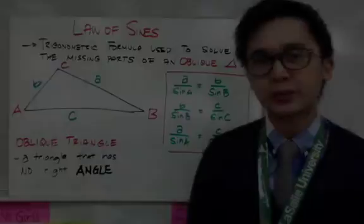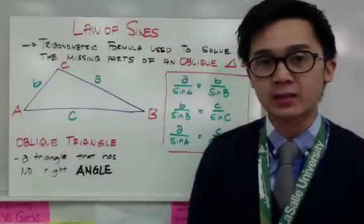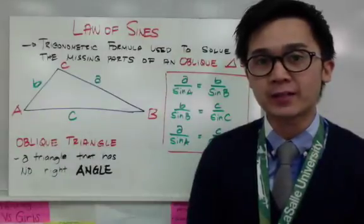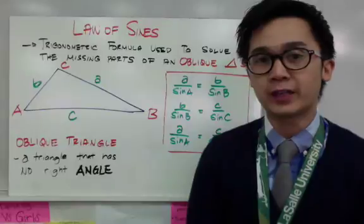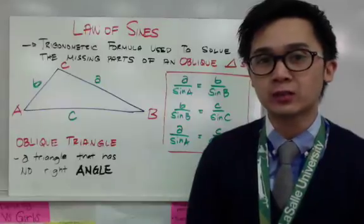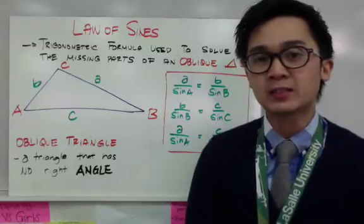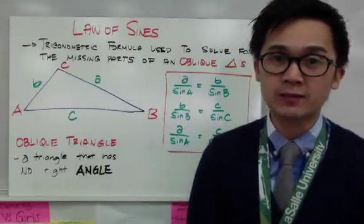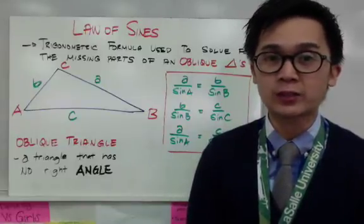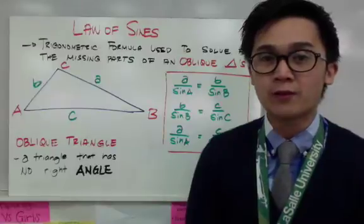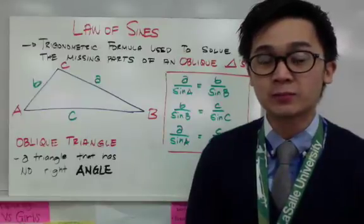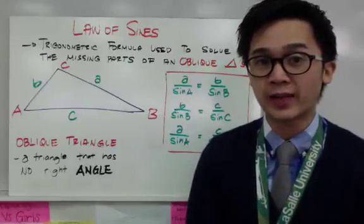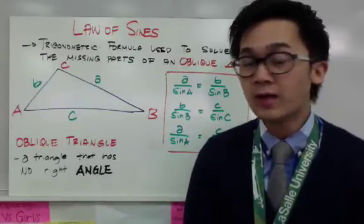In algebra, we learn to use the Pythagorean theorem in finding the missing sides of a given right triangle. But it has its limitation, and the limitation is that the only triangle you could use the Pythagorean theorem for is a right angle triangle.